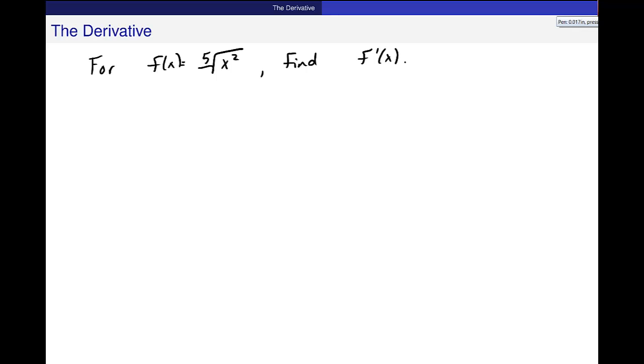So I'm going to rewrite this as f(x) equals, and this is x to the 2 fifths power, if you remember my rational exponents. So in this case, n is 2 fifths.